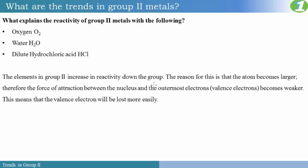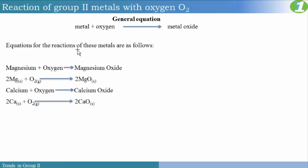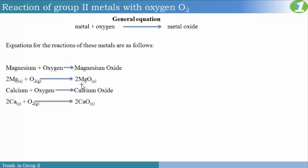When you react metals with oxygen, you simply burn them in air and observe what happens. The reactions of group 2 metals with oxygen produce a metal oxide. Here are some equations: magnesium plus oxygen gives magnesium oxide, and calcium plus oxygen produces calcium oxide. So group 2 metals burn in oxygen to produce the metal oxides. Remember that the compounds formed in the products are ionic.